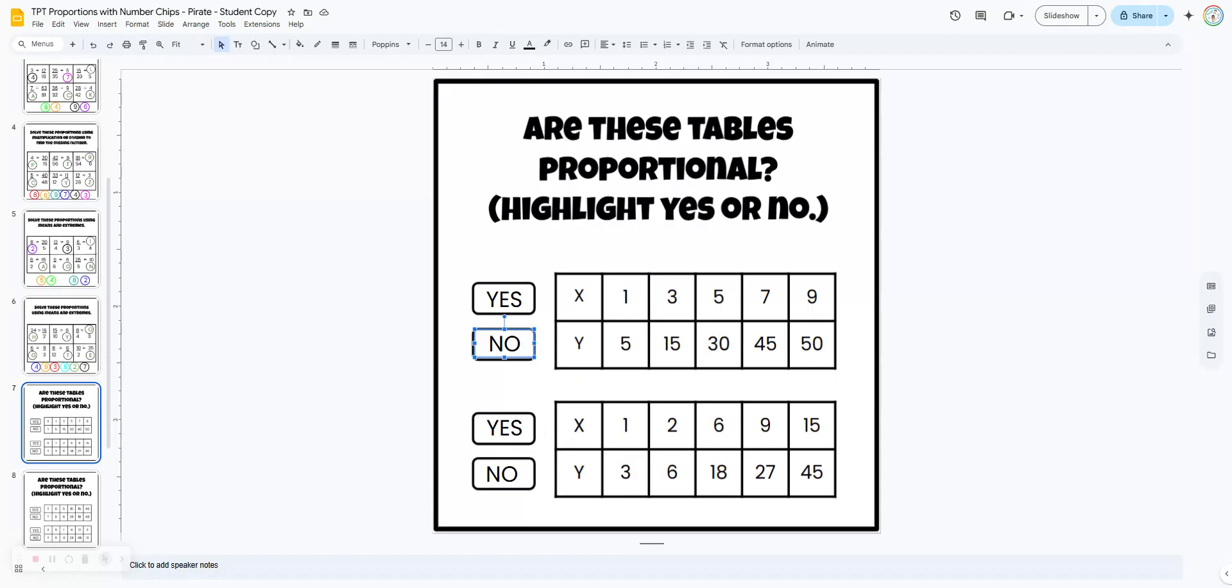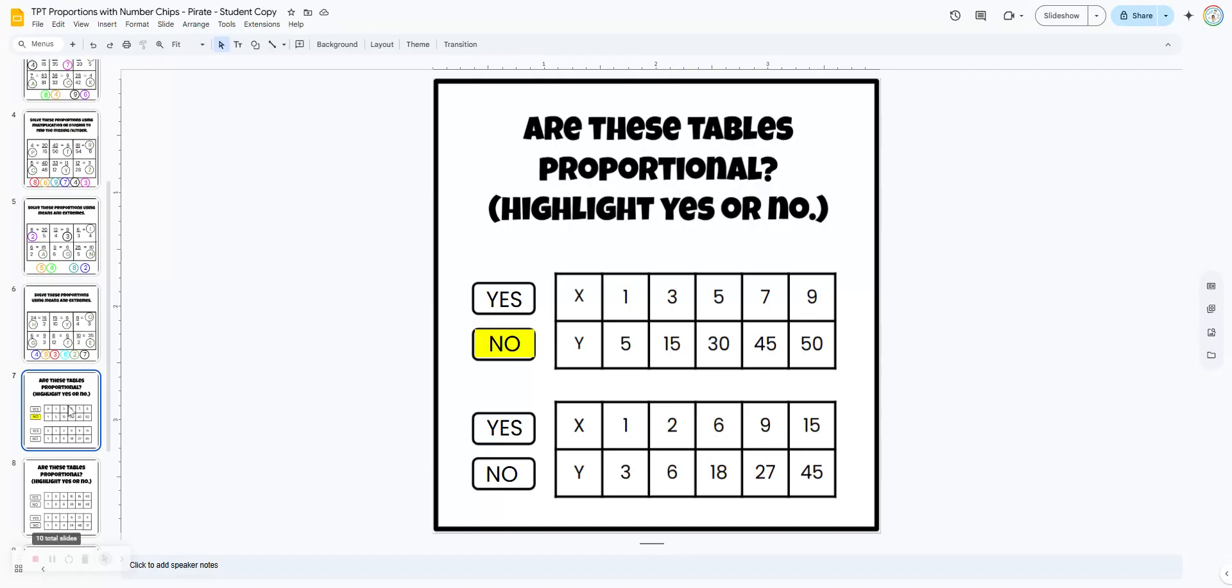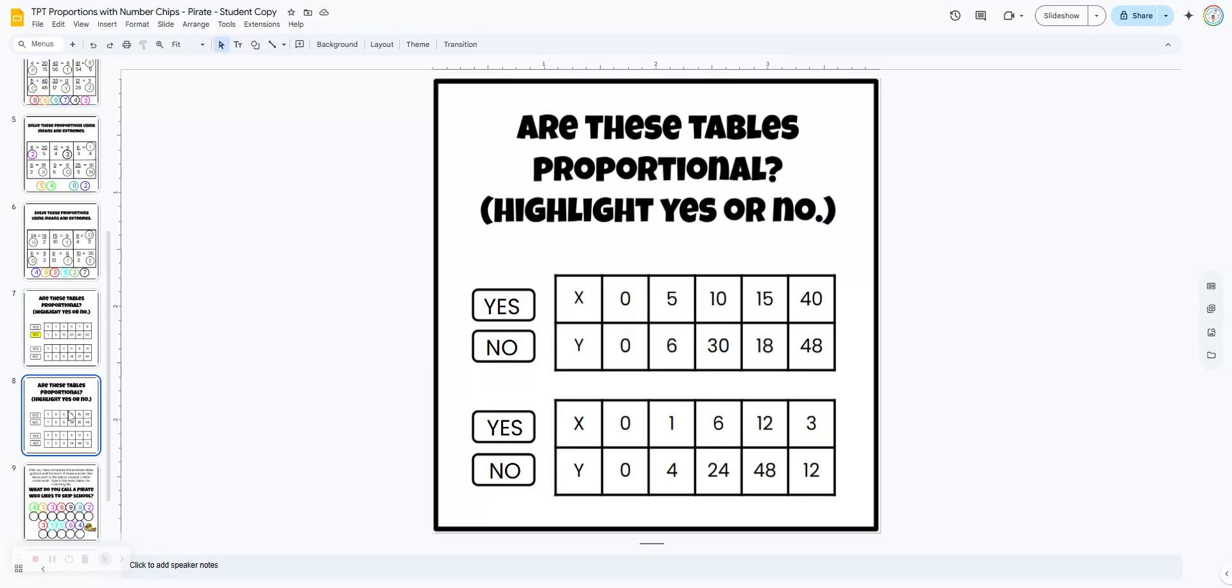So they're going to click on it. They're going to come up here to this fill color feature. They're going to choose any color they like to highlight their answer. They've got three more tables to determine whether they're proportional so the ratios have to be equivalent. And then they highlight yes or no.